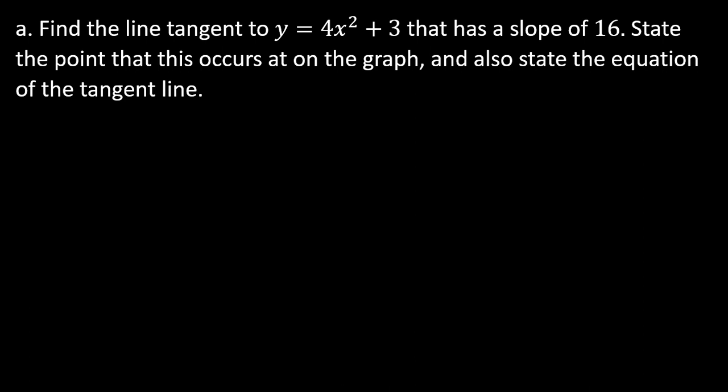Starting with the first one: find the line tangent to y equals 4x squared plus 3 that has a slope of 16. State the point that this occurs at on the graph and also state the equation of the tangent line. The word 'tangent' needs to be screaming at you that you need to take the derivative. Before you do anything else, take the derivative — in a calculus class, especially when working on derivatives, every problem you should be taking a derivative.